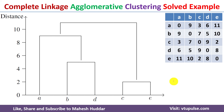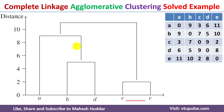To draw the dendrogram, we start with the sequence in which we merged the clusters. In the first iteration we merged C and E, so that is the first cluster shown. Then we merged B and D, which is drawn next in the dendrogram. Then we merged A with BD, and finally we merged ABD with CE — that is what you can notice in the dendrogram.